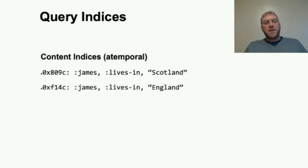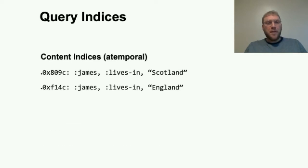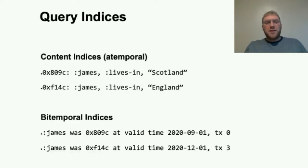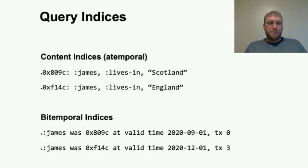In Crux, we make a distinction between content and bitemporal indices. The content indices keep track of all the values an entity has ever taken — so if I lived in Scotland but then moved to England, these indices would contain both facts. They don't know anything about what entities had what values and when. The bitemporal indices store what version each entity has at any point in bitemporal time. Given that Crux is a document database, we do this temporal resolution at the document level, and this version is in fact a content hash of the document's content.